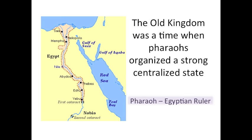This map shows the lands of Egypt during the Old Kingdom. The Old Kingdom was a time when pharaohs organized a strong centralized state. These pharaohs, or Egyptian rulers, were more than what we think of as rulers today. They were actually believed to be God, and they had absolute power. They owned and ruled all of the kingdom. They took great pride, though, in preserving justice and order.